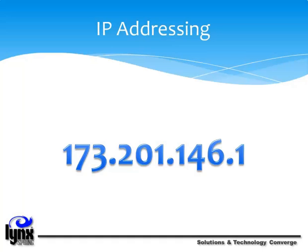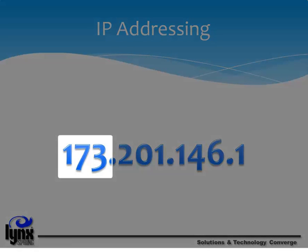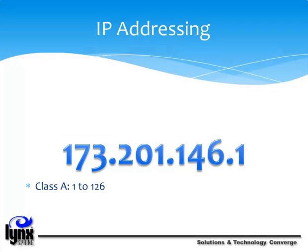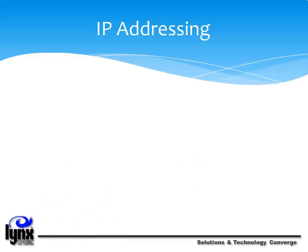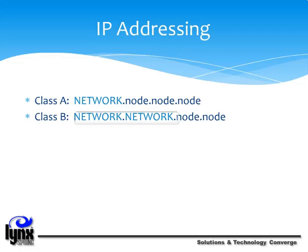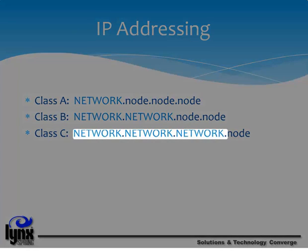There are five different address classes. You can determine which class any IP address is by examining the first four bits. Class A addresses start with 1 to 126. Class B is 128 to 191. Class C is 192 to 223. Class D is 224 to 239. And Class E is 240 to 254. In a Class A address, the first octet is for the network address and the rest identify the node. In a Class B address, the first two octets identify the network and only the last two are for the node. And in Class C addresses, the first three octets identify the network and only the last one identifies the node.